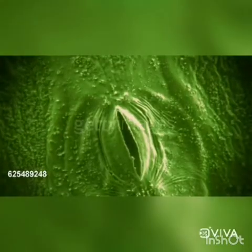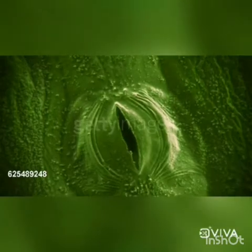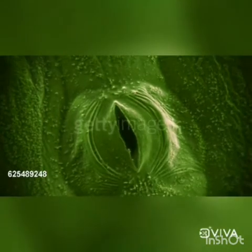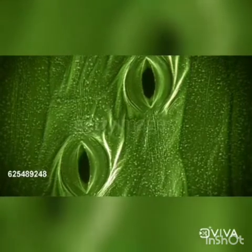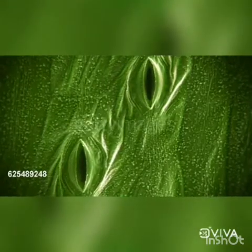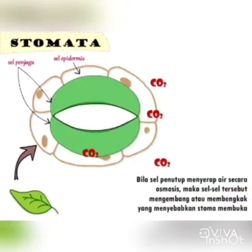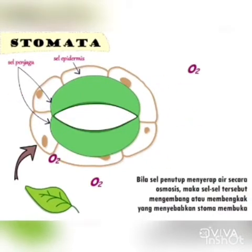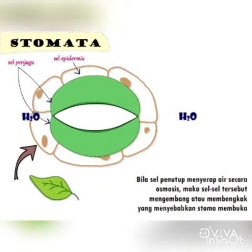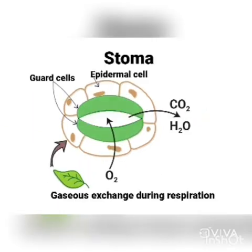Gaseous exchange in plants mainly takes place through the stomata that are present in large number on the leaves. Aap loog yeh sab jaante hai ki leaves mein large number of stomata rehta hai, jiske through plants mein gaseous exchange hota hai. Oxygen and carbon dioxide diffuses in and out through this stomata.